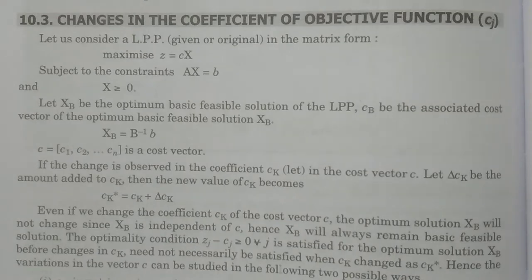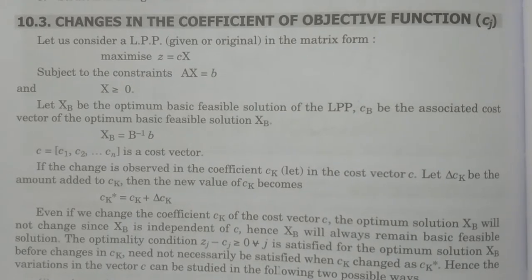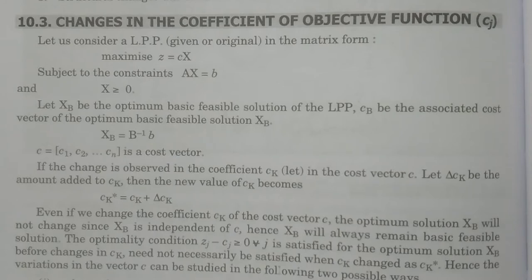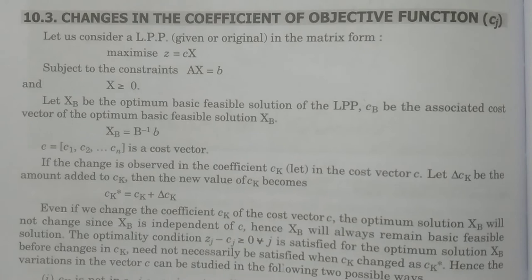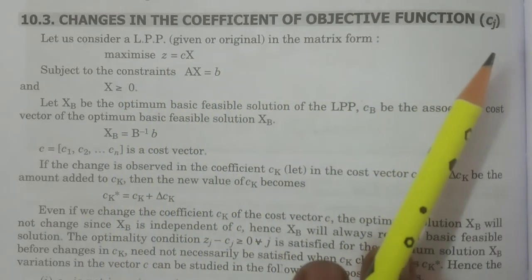Welcome to BSc Statistics students. In this class, I explain changes in the coefficient of the objective function cj in the post-optimal analysis — that is, what would be the effect on the optimum solution if some of the coefficients of the objective function are going to be changed. These structural changes I want to discuss here.